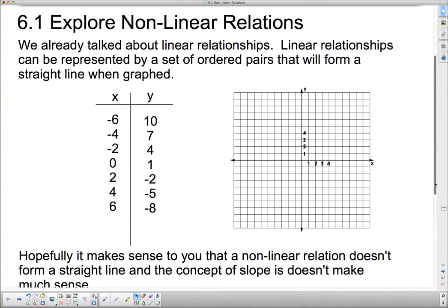We have to remember what a linear relationship was. We already talked about linear relationships. Linear relationships can be represented by a set of ordered pairs that will form a straight line when graphed.